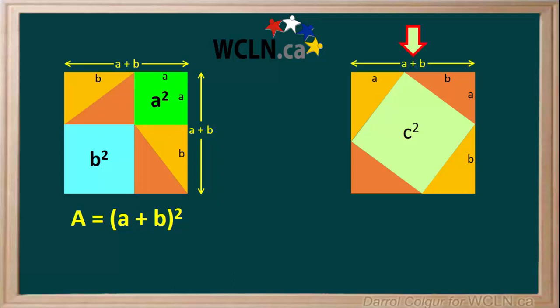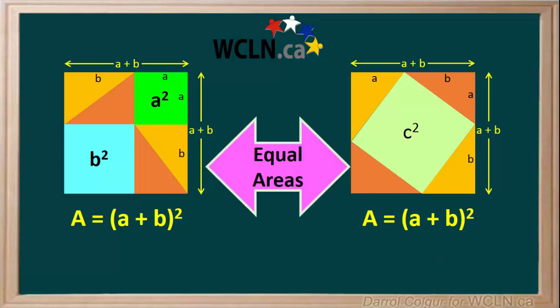You can see that the width of the square on the right is A plus B, and the length of the square is also A plus B. Therefore, the area of the square on the right is also equal to A plus B in brackets squared. So, we see the square on the left and the square on the right have equal areas. Study the two squares and make sure to convince yourself that this is true.